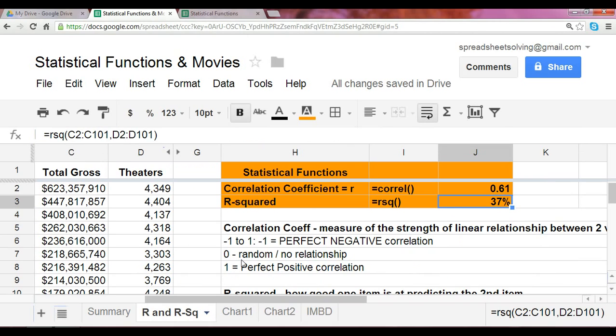Thank you so much for listening in today. We've learned the correlation coefficient, the r-squared. We also learned the functions that are used in order to compute that. And we used a neat example here based on movie data.